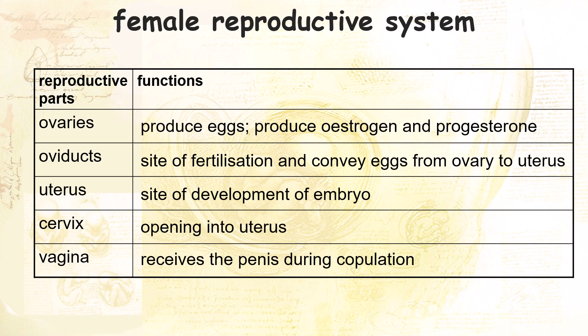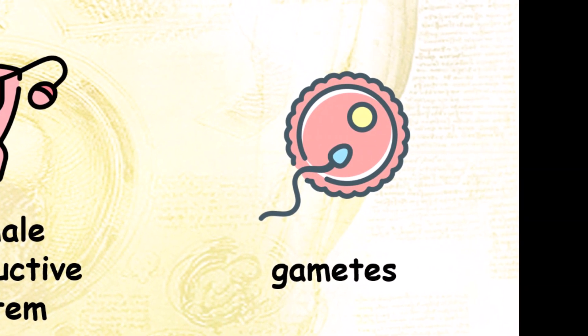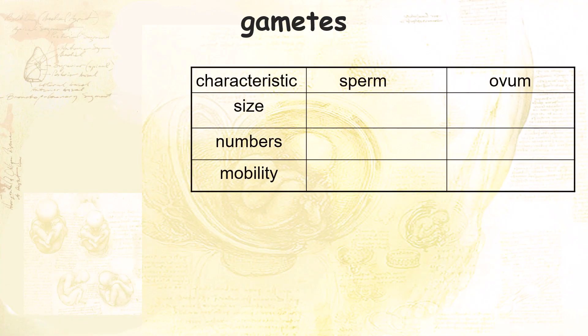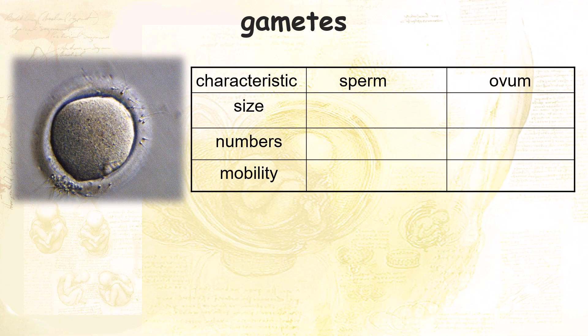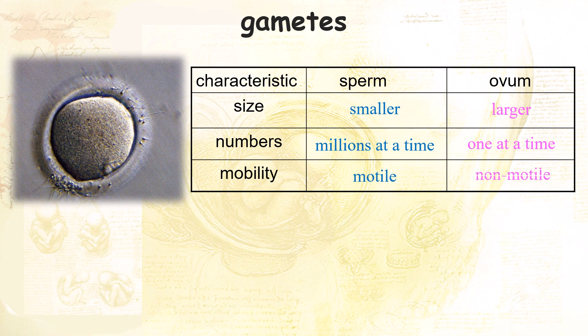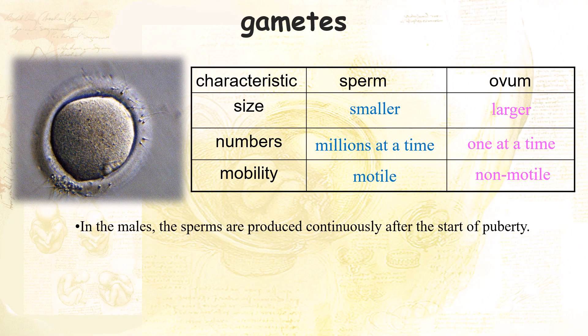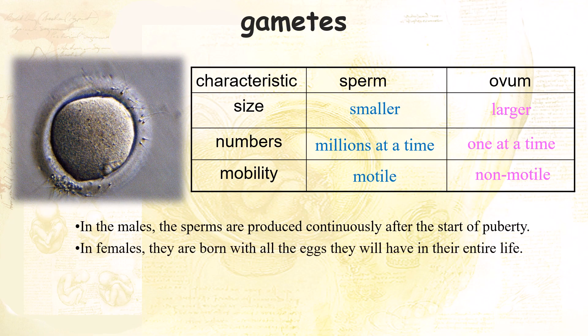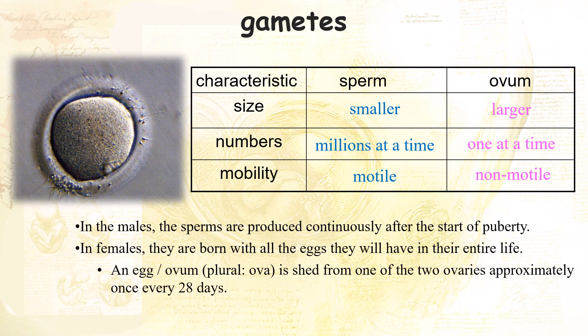Besides the different reproductive systems, there are also male and female gametes. The male gamete is known as sperm, while the female gamete is known as an ovum, or egg. Sperm are much smaller than eggs but are released in the millions, while typically only one egg is released during one cycle. Sperm can move by themselves, while the ovum cannot. In males, sperm are produced continuously after the start of puberty, while females are born with all the eggs they will have in their lifetime. An egg is usually released once every 28 days.